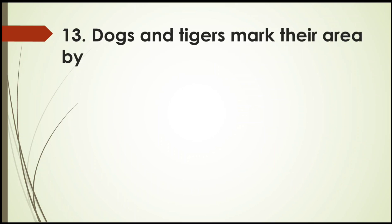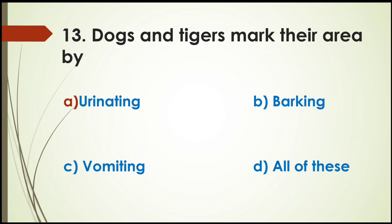Next. Dogs and tigers mark their area by? You know dogs and tigers, they mark their area. But how? Options: By urinating, Barking, Vomiting, or all of these. Urinating means with the urine. Yes, dogs and tigers mark their area by urinating. And they can also recognize if someone entered their area. So right answer is urinating.